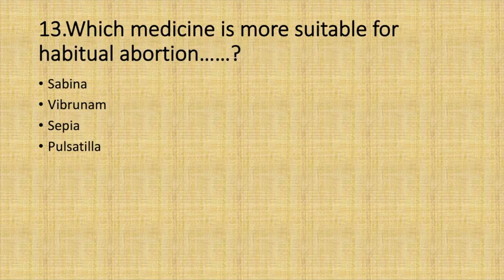Which medicine is more suitable for habitual abortion? Option A. Sabina. Option B. Viburnum. Option C. Sepia. Option D. Pulsatilla. Answer: Option A. Sabina.